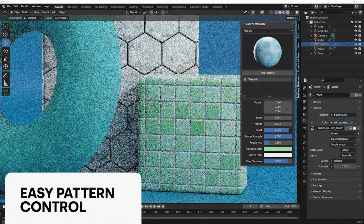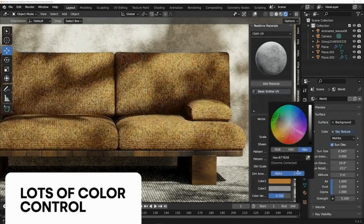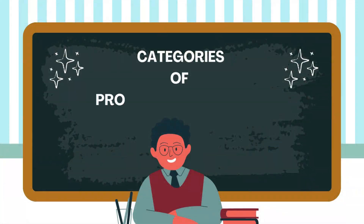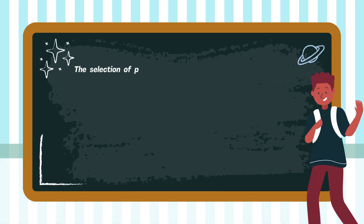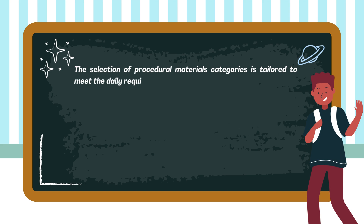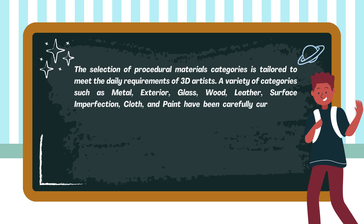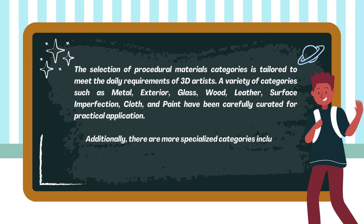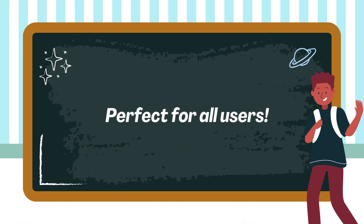Compatible with both EEVEE and Cycles render engines, the add-on offers simple pattern adjustment, effortless roughness management, and extensive color customization options. The selection of procedural material categories is tailored to meet the daily requirements of 3D artists. Categories such as metal, exterior, glass, wood, leather, surface imperfection, cloth, and paint have been carefully curated. More specialized categories including carbon fiber, hexagon, terrazzo, tiles, camo, and abstract cater to a wide range of use cases, perfect for all users.